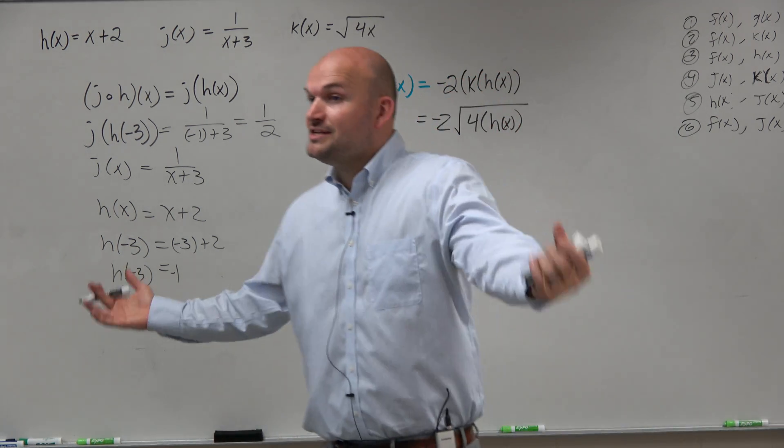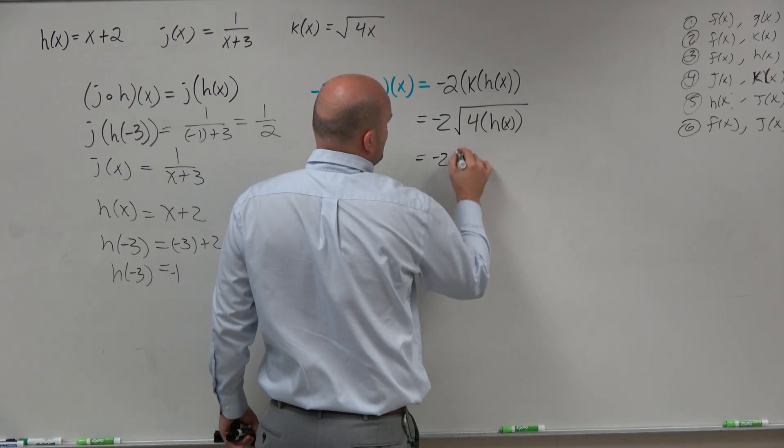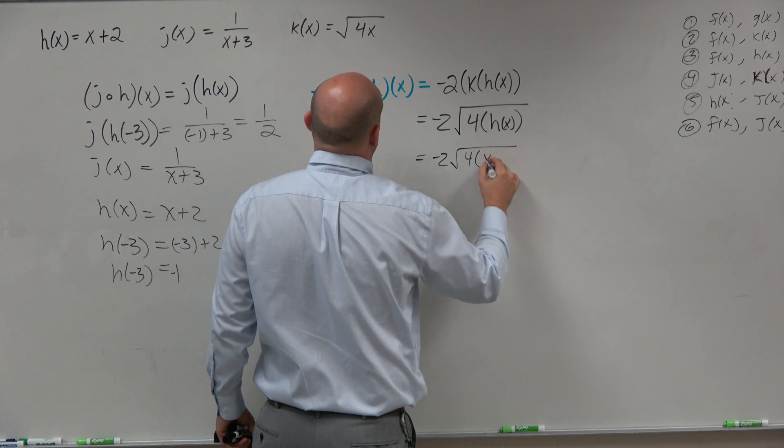But in this problem, we know what h of x is. h of x is provided to us. It's x plus 2. Negative 2 square root of 4 times x plus 2.